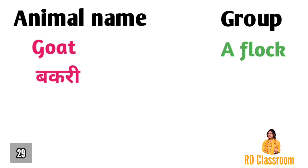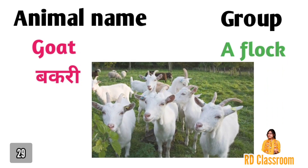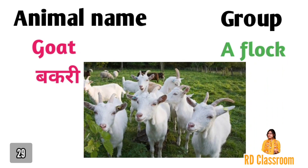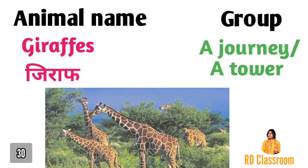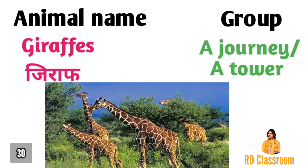Number twenty-nine is goat, ya fir bakri, jiske group ko kaha jata hai a flock. Number thirty is giraffe, jiske group ko kaha jata hai a journey ya toh a tower.